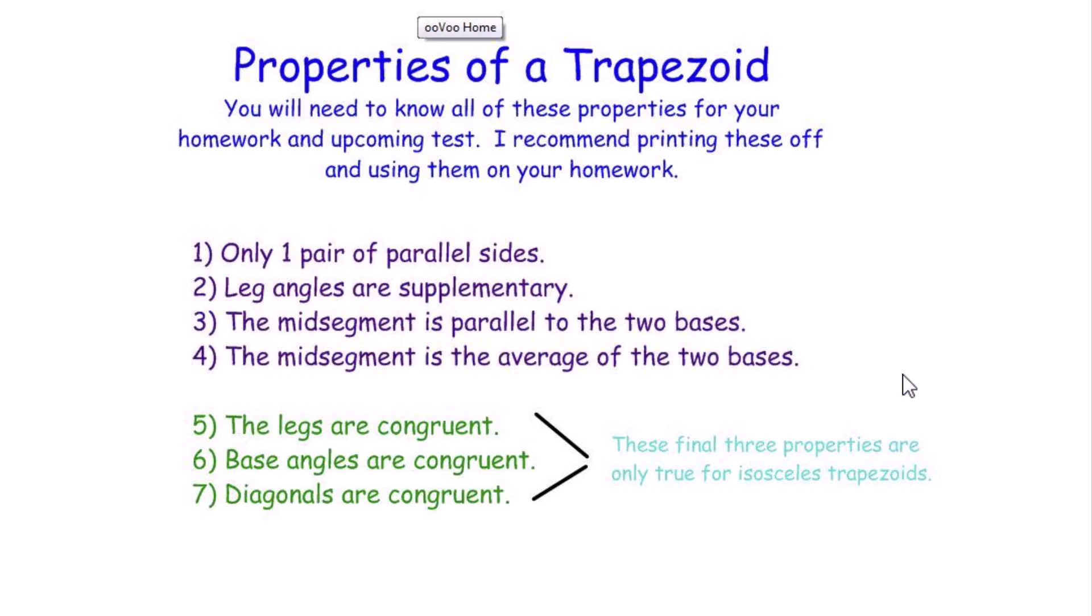The properties of trapezoids are the angles that are attached to the legs are supplementary. So any of those angles that are attached are supplementary. The median is parallel to the base. The median is also half the sum of the bases, so it's one half times base 1 plus base 2. In the base angles of an isosceles trapezoid, they are congruent.